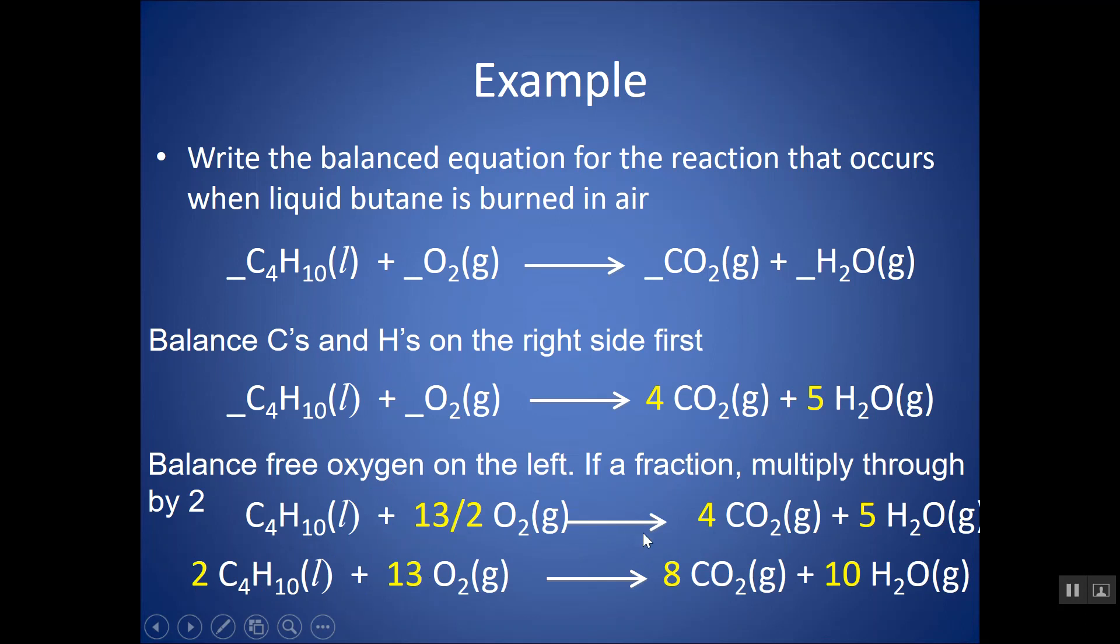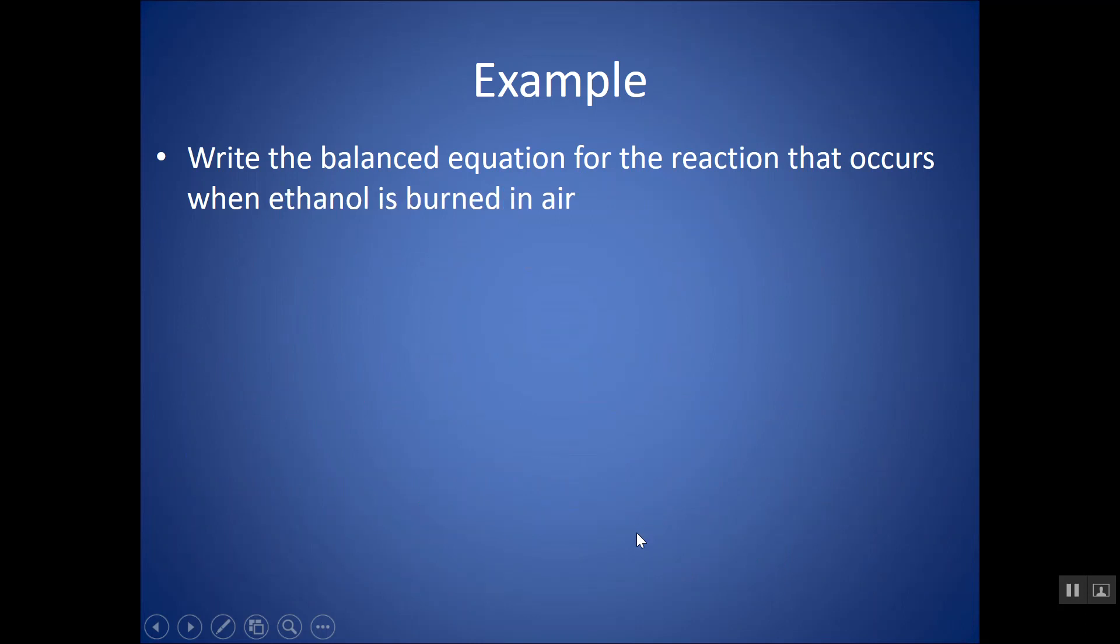So, this would be multiplied by 2, and this, and this, and this. Essentially, it gets rid of that over 2, and it multiplies the other ones by 2. So, we'd get a 2, a 13, an 8, and a 10. So, if you have an odd number, just put that number over 2 and multiply all the entire reaction, every coefficient, by 2. Because remember that when we balance, we want the smallest whole number ratios.